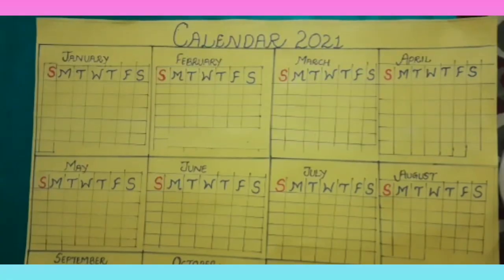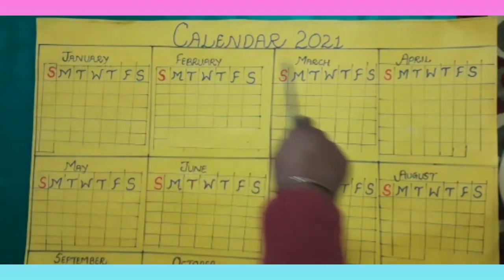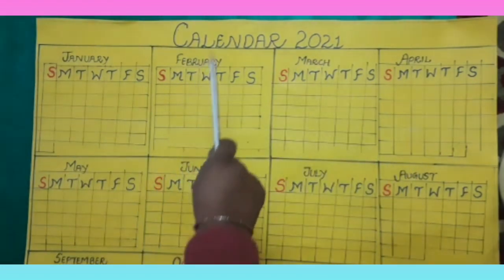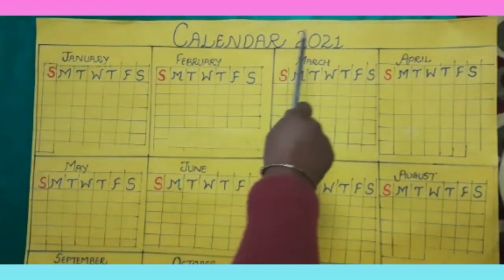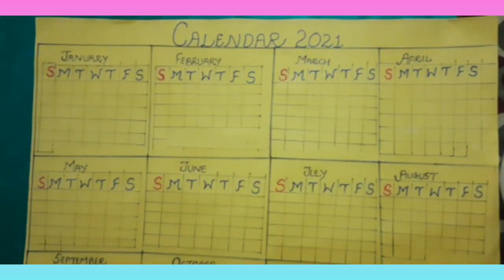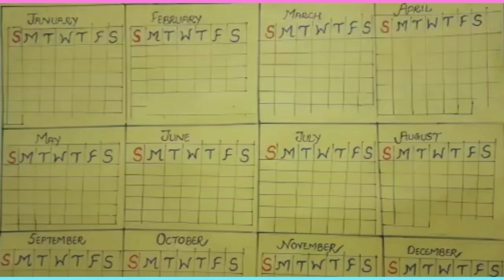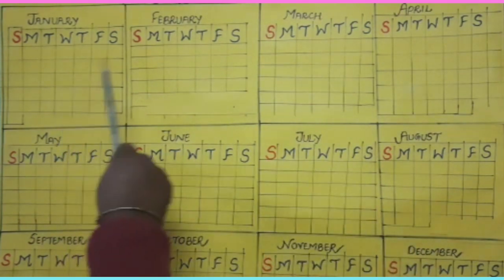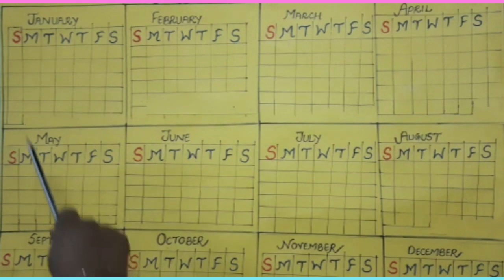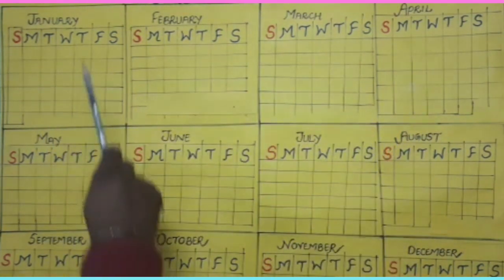Dear students, let's learn how to make a calendar. We will make a calendar of 2021. Take a chart and divide it into 12 equal parts, then write the names of the months.